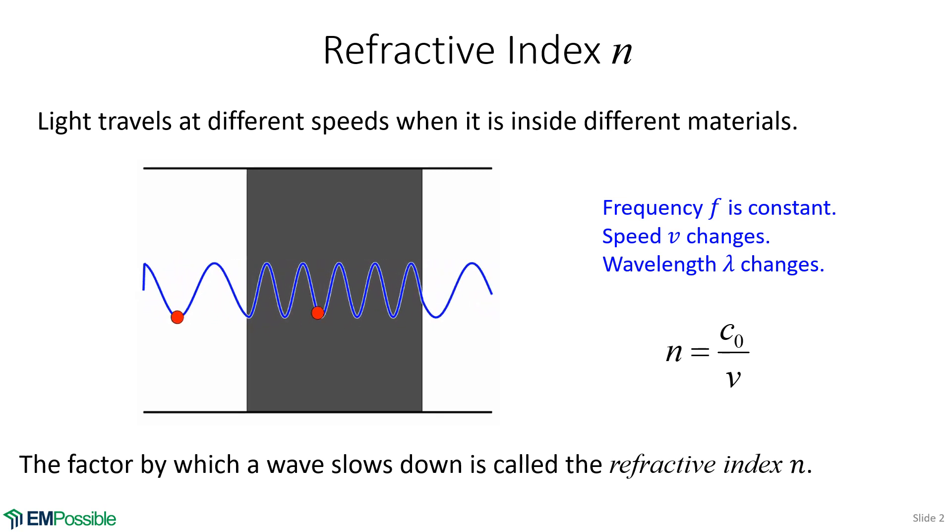The refractive index is the factor by which a wave slows down inside of a medium relative to the speed of light in vacuum. We're looking at a wave in air that enters some dielectric medium and then exits again. We notice the wave slows down when it enters this medium and speeds up again when it leaves.